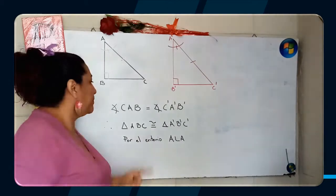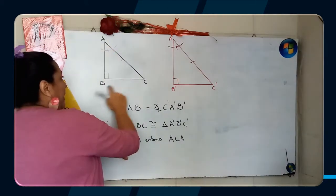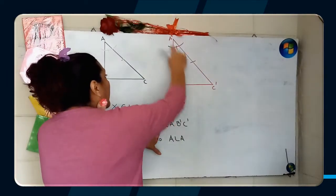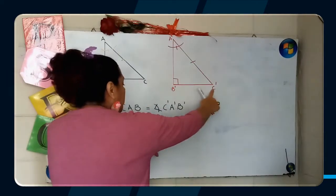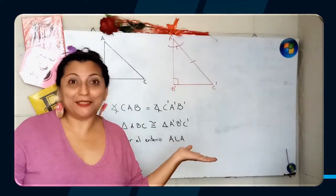Por tanto yo puedo decir, el triángulo ABC es congruente con el triángulo A'B'C'. Y ambos son triángulos rectángulos.